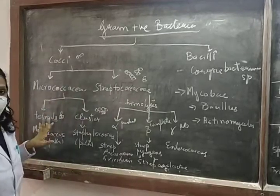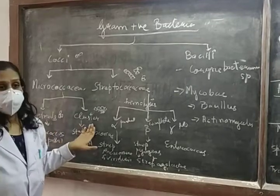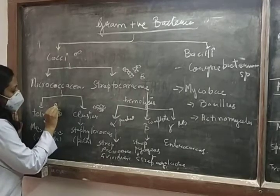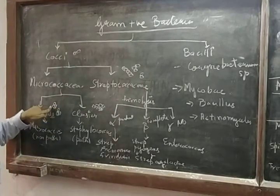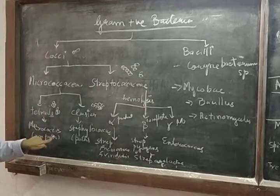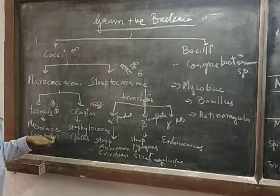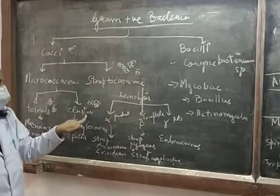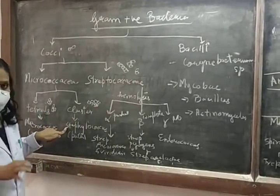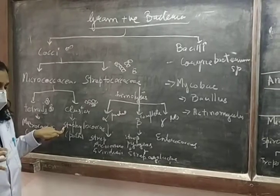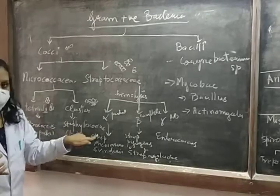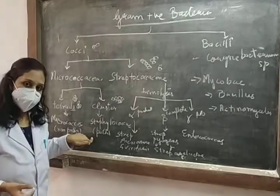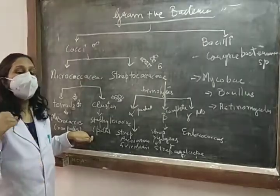Micrococcaceae is again divided into two: one is tetrads and the other is clusters. Tetrads look like groups of four — their structural picture in microscopy looks like this. These are Micrococci; they are found in the atmosphere, they are normal bacteria and they are not pathogenic. In clusters, like a grape pattern — grape clusters — they are Staphylococcus, which are pathogenic, highly pathogenic, causing multiple skin infections and different other infections you will be learning later.